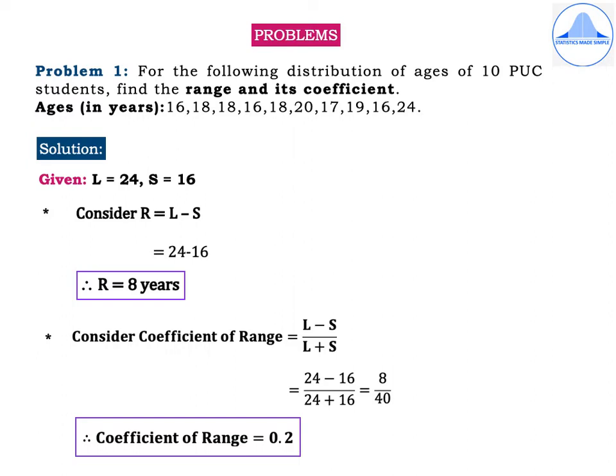Solution. Given the largest value L is equal to 24 and the smallest value S is equal to 16. Calculating the range: R = L − S = 24 − 16, therefore R is equal to 8 years. Range is an absolute measure of dispersion, so we write the units of measurement as specified in the problem.